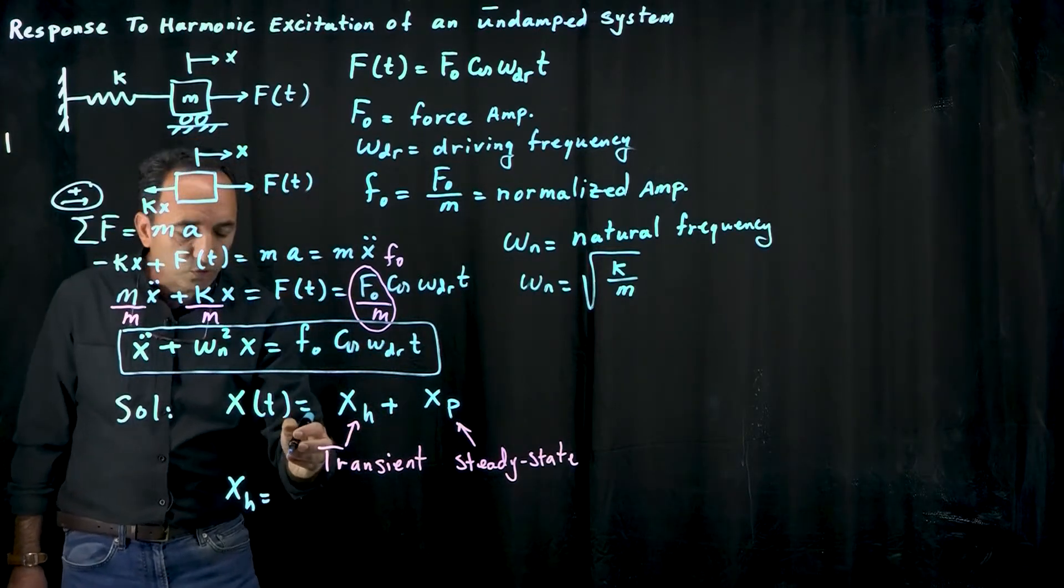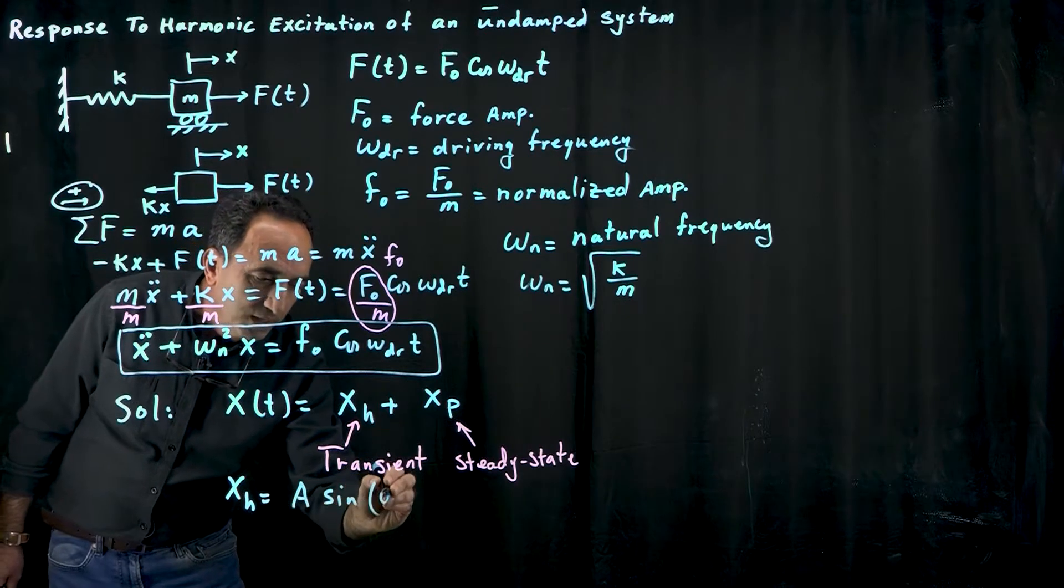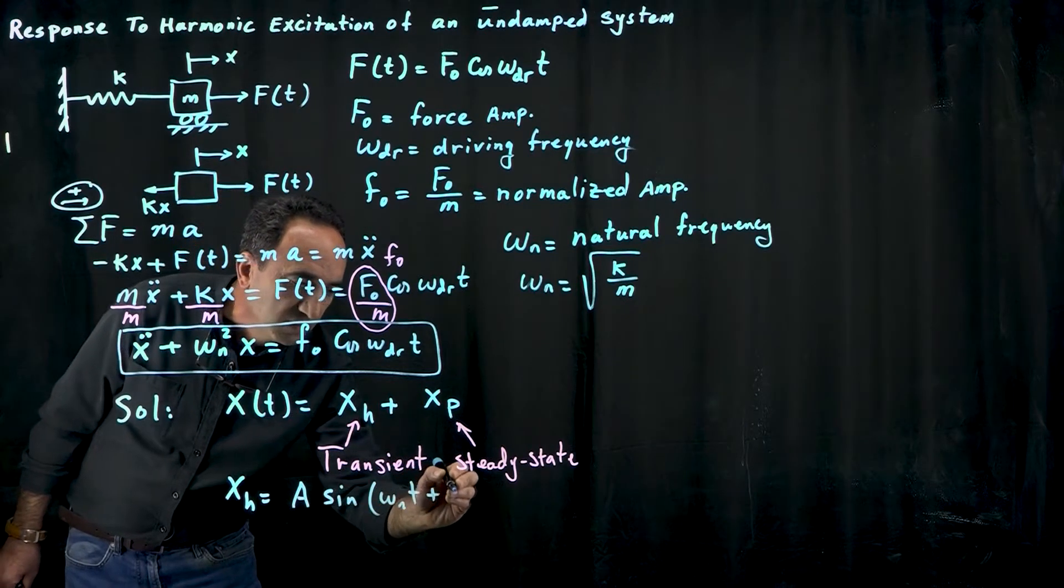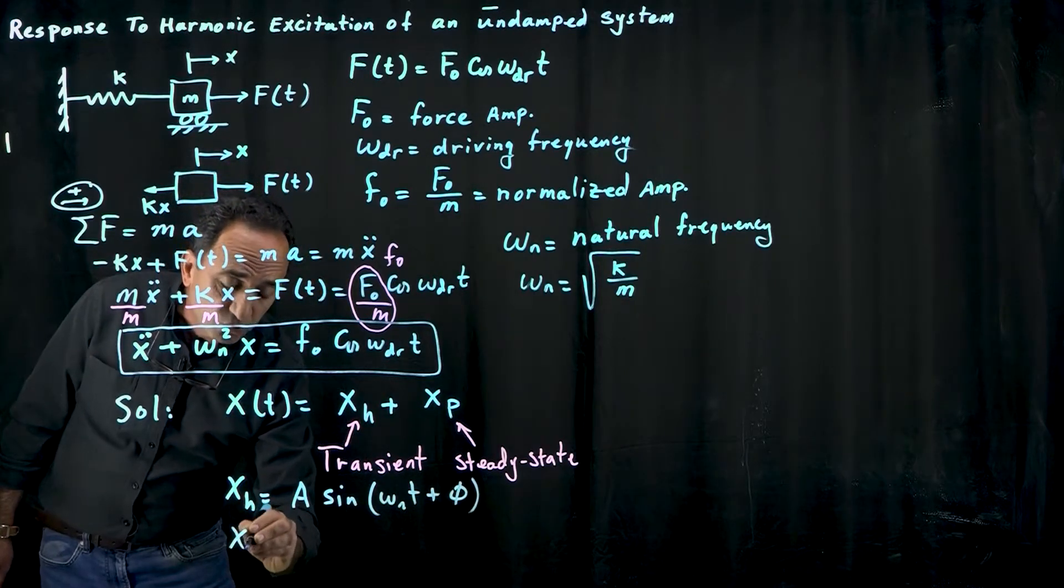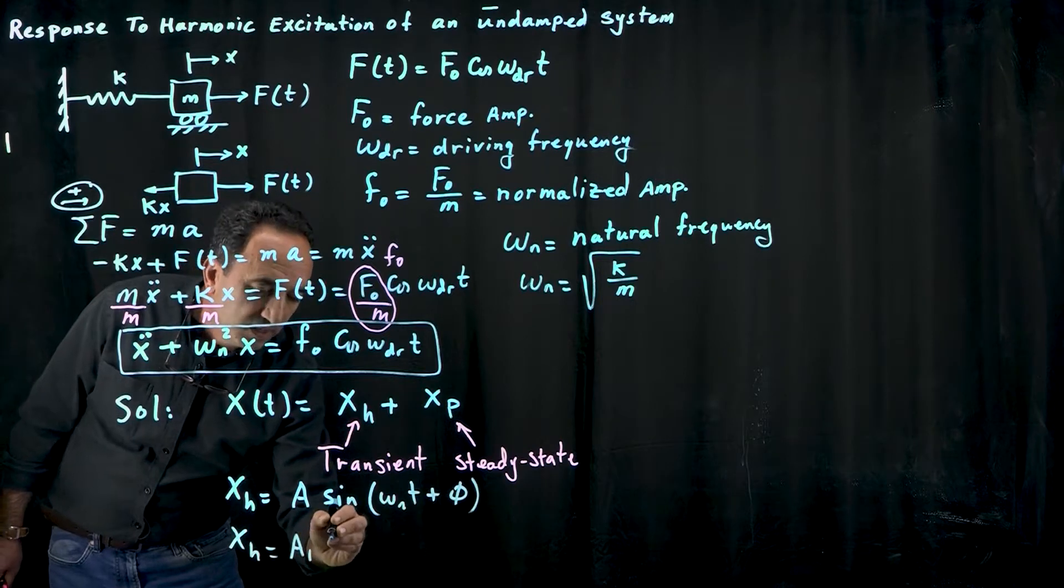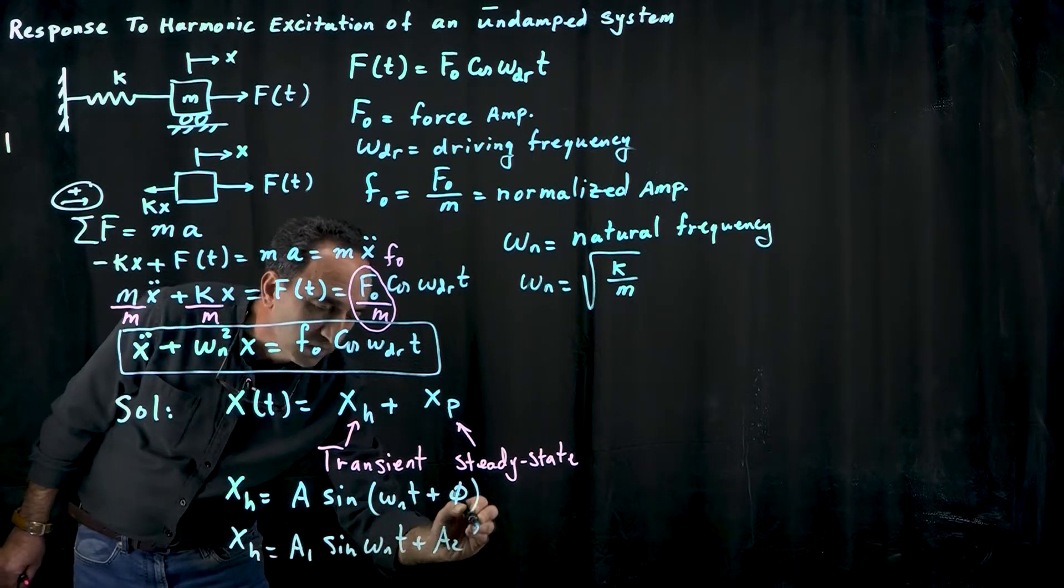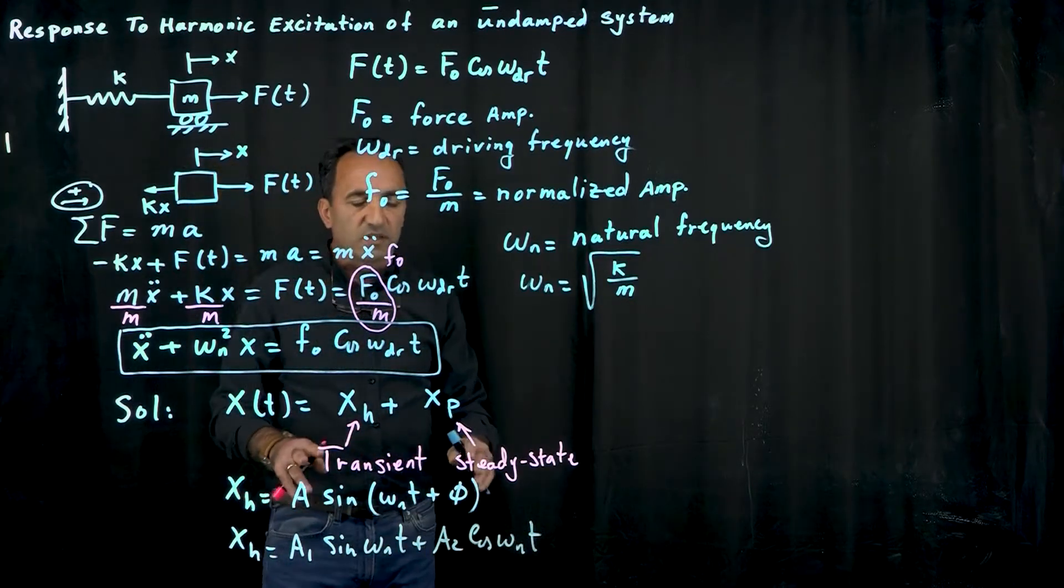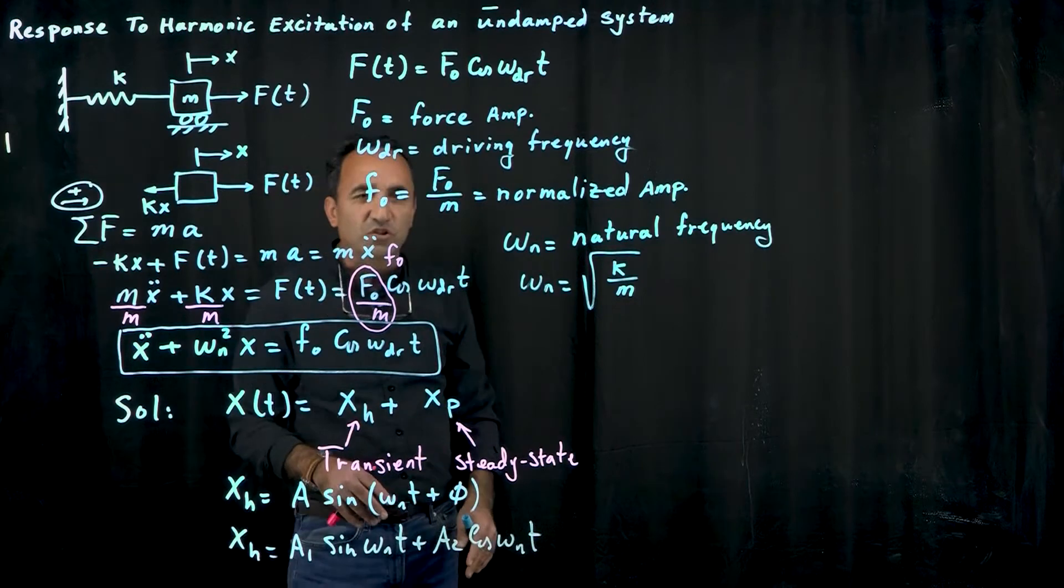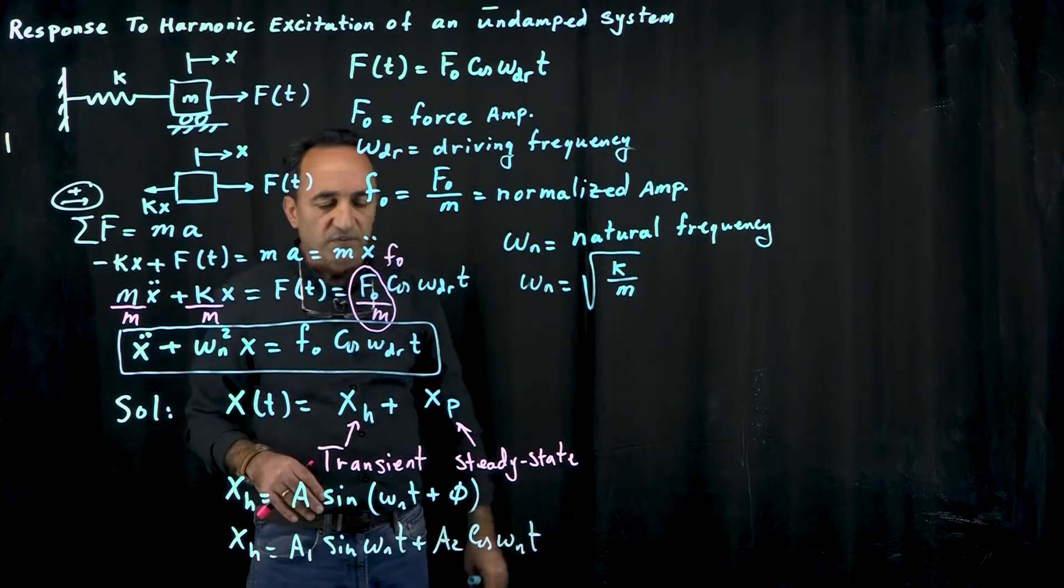Homogeneous solution is if the right hand side is equal to zero. You could write it as one amplitude A sine omega_n t plus some phase angle, but in our situation it's better to write it as A1 sine omega_n t plus A2 cosine omega_n t. Anytime you have combination of sine and cosine you could eventually change it to a sine or a cosine with different phase angle.